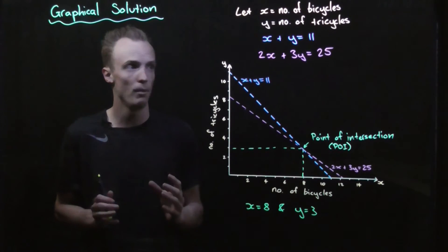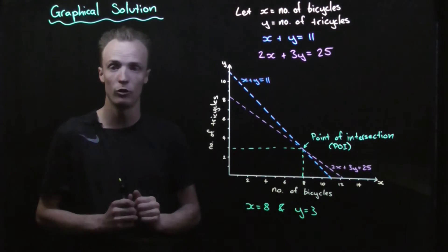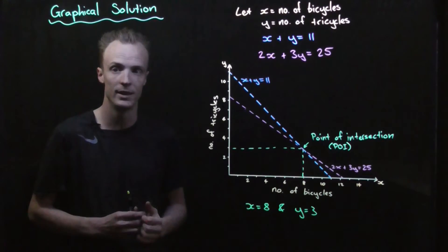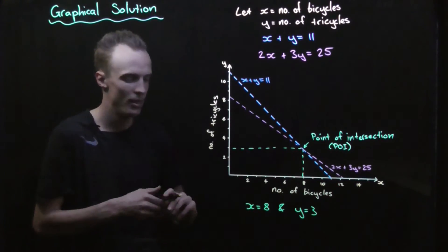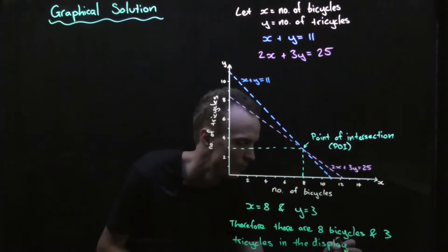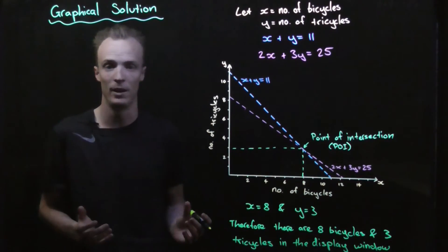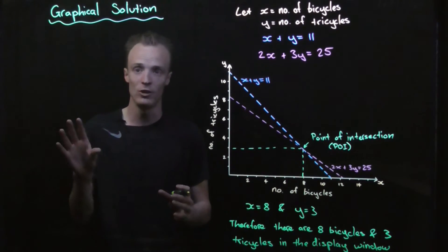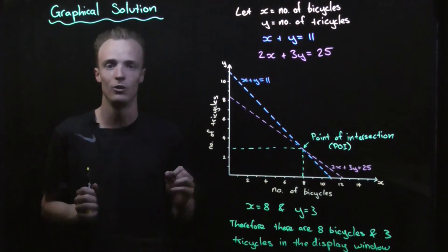Back to the original problem: x represents the total number of bicycles and y represents the total number of tricycles. So the point of intersection between these two lines shows the solution to our bicycle problem — there are 8 bicycles and 3 tricycles in the display window. We know this is the right solution because we actually found the same answer through trial and error. This is just a second way to find the solution.